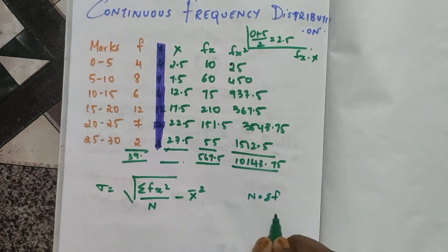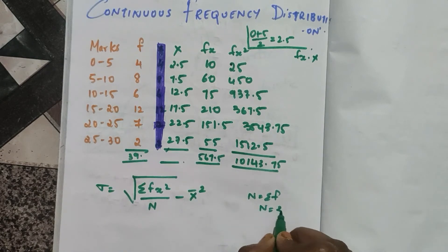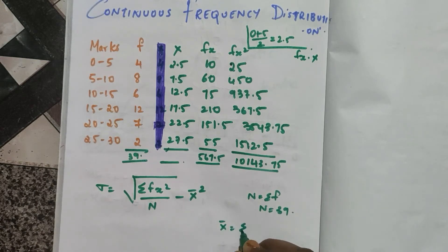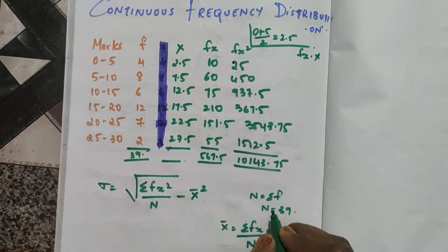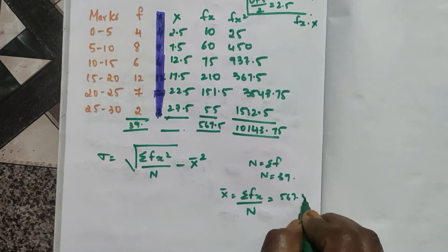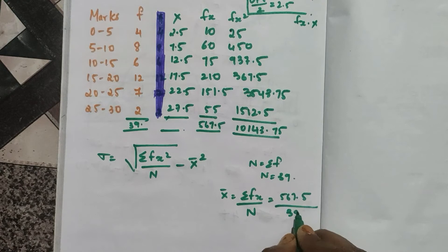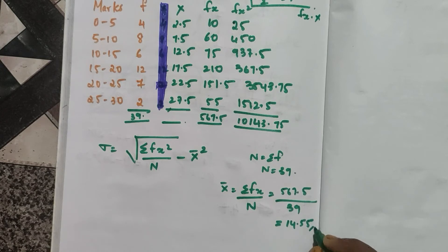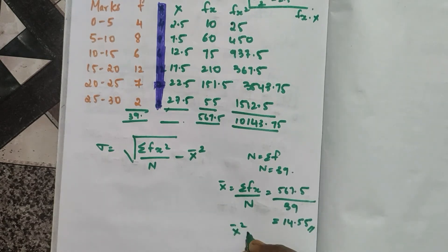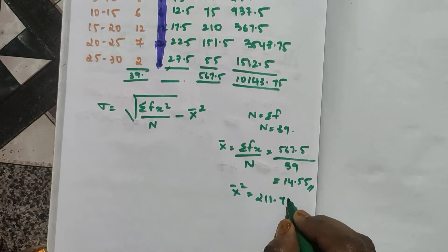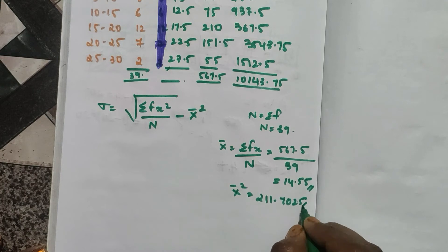Now I need to find the mean. The mean formula is summation fx divided by n. The value for summation fx is 567.5 divided by n which is 39. If I divide this I get 14.555. Now I need to square this, so if I square this I get 211.7025.